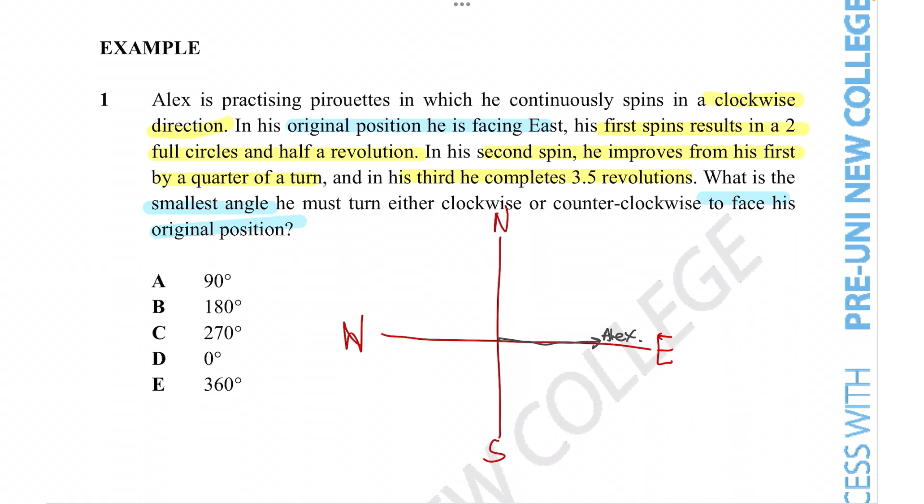First of all, he spins two full circles and half a revolution. Now think about this. If you spin in one full circle, you are back to where you started. So the fact that he spun twice doesn't actually make any impact on the final position of Alex spinning. However, the half revolution definitely does impact his later position. Alex starts off east and spins two times fully and then spins half a revolution more.